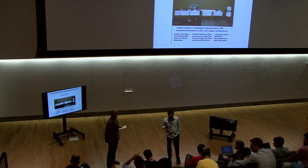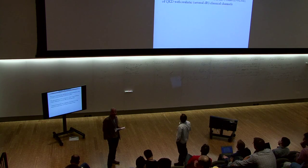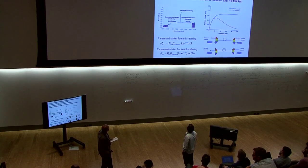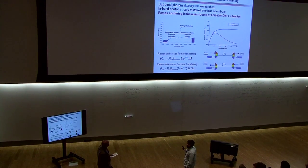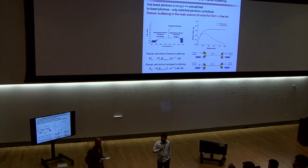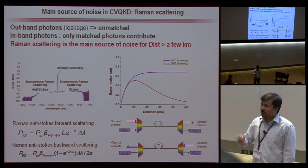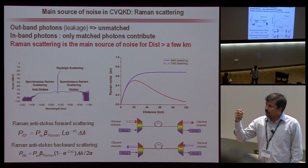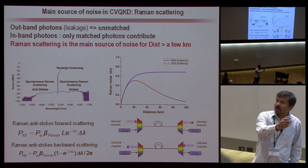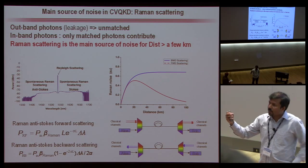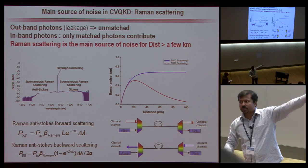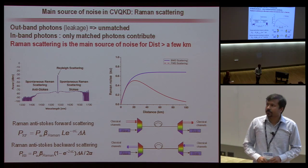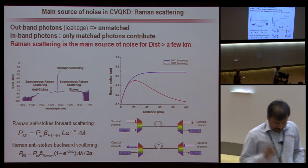Question: You showed a graph of background noise versus distance with a peak at about 20 kilometers — is there a reason why the Raman noise reduces again at further distances? Answer: Yes, in the forward direction it's proportional to the power — once you send light at 1 milliwatt, the intensity decreases with distance, so the forward Raman peaks at 21 km then decreases. But in the reverse direction, the intensity is decreasing yet you get contributions from all points along the fiber, so the backward direction saturates. Thank you.